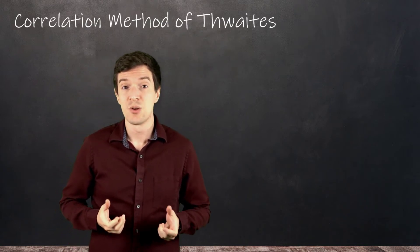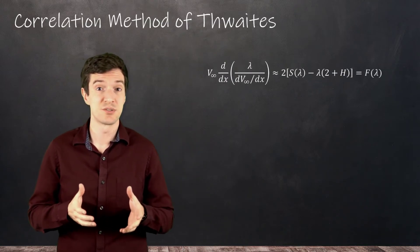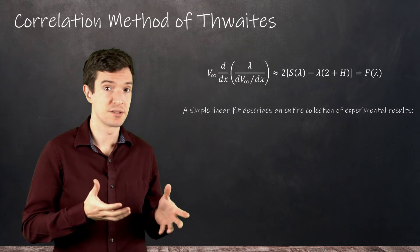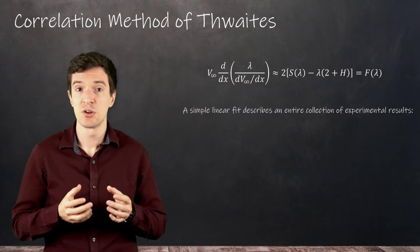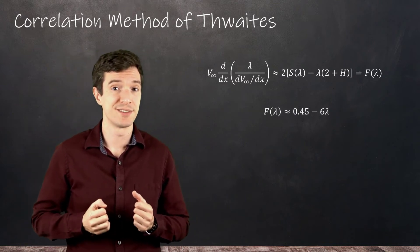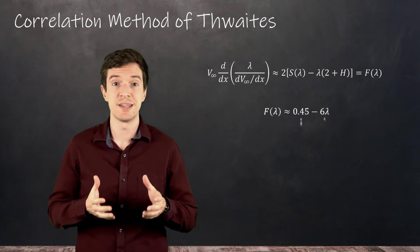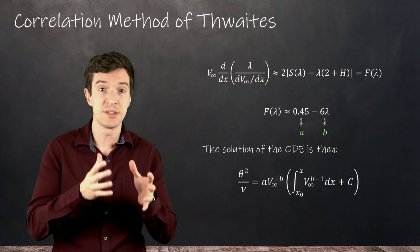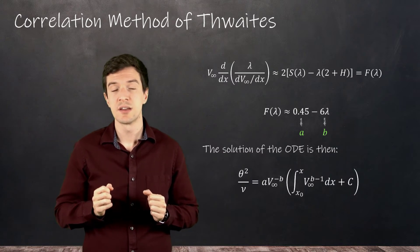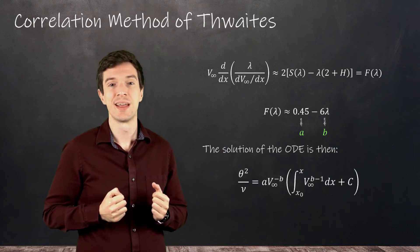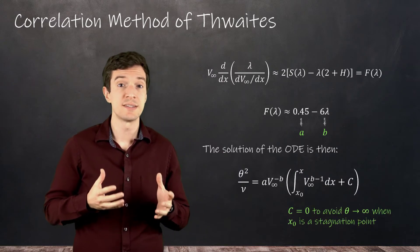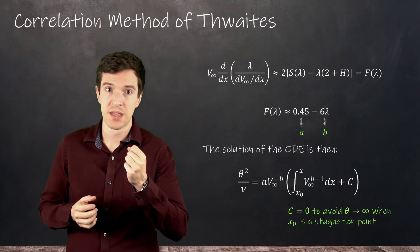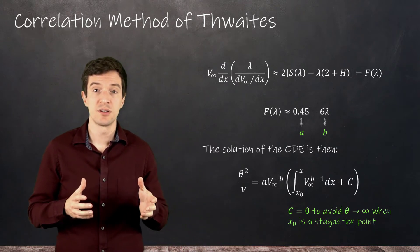Going back to the analysis, we can rewrite the equation in terms of these correlation functions. Thwaites found that for a large set of experimental results, the f function could be described by a simple linear fit. Substituting this expression into the ODE, we can solve it and obtain an estimate of the momentum thickness that we can use to calculate friction and drag. In this expression the constant C is typically set to zero to avoid theta being infinite when the location x_0 is a stagnation point.